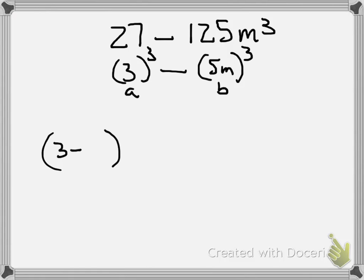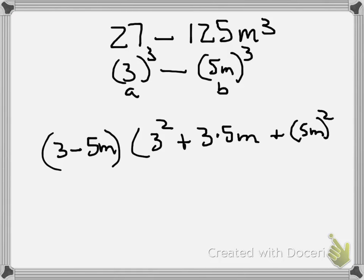It's A subtract B, and then A squared, so 3 squared, plus A times B, plus B squared.